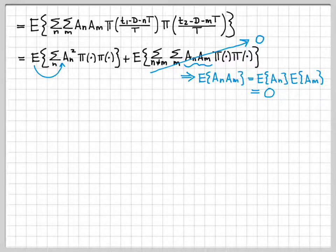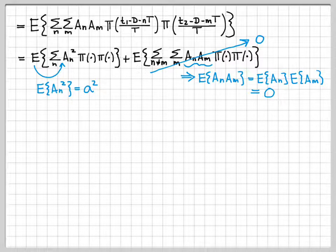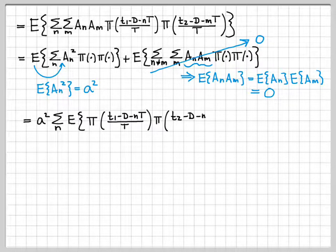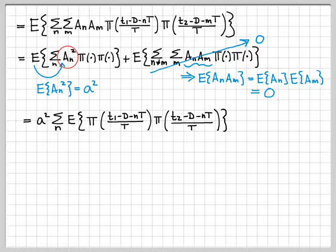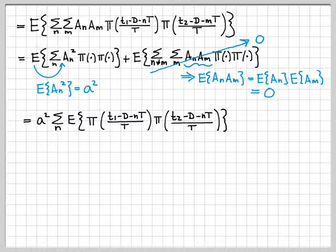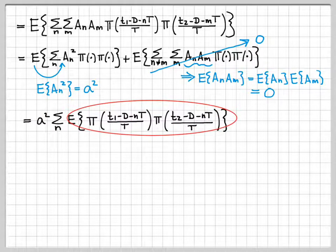Now let's go back to the first diagonal part. Bringing the expectation operator inside, I get the expected value of an squared. What values can an squared take on? If an equals a, then an squared is a squared. If an equals negative a, then an squared is also a squared. So the expected value of an squared is always a squared. Note also that an and d are independent, so I was able to do these expectations independently. I've already taken care of all the expectations with respect to a; now I just need to worry about the expectations with respect to d.